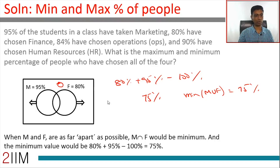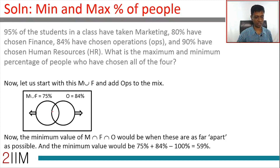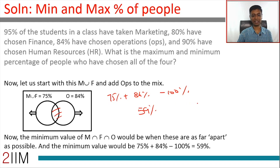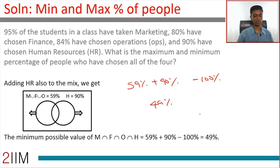Now include OPS: M ∪ F is 75% and OPS is 84%. Stretching them out, the minimum intersection is 75% + 84% − 100% = 59%. Next, combining 59% with HR at 90%, the minimum is 59% + 90% − 100% = 49%. So the minimum possible value for all four is 49%.